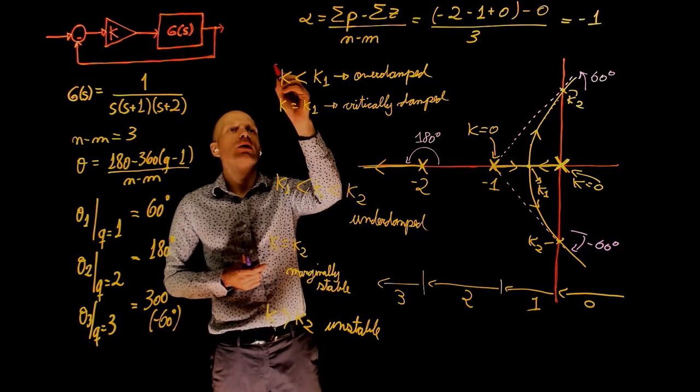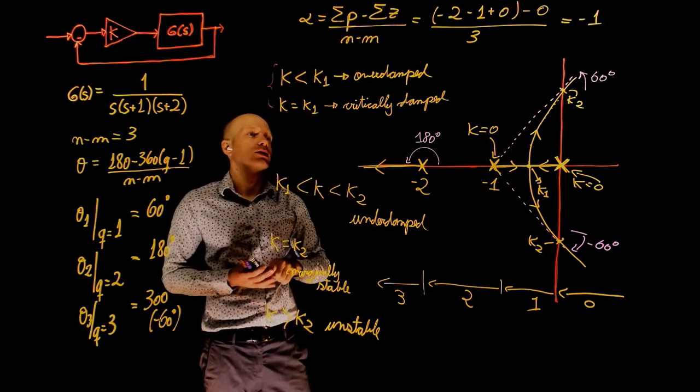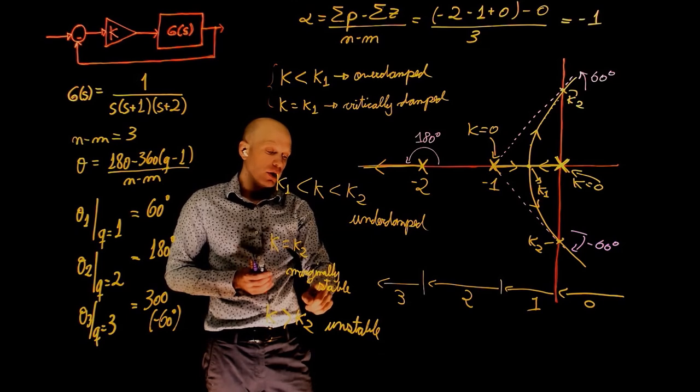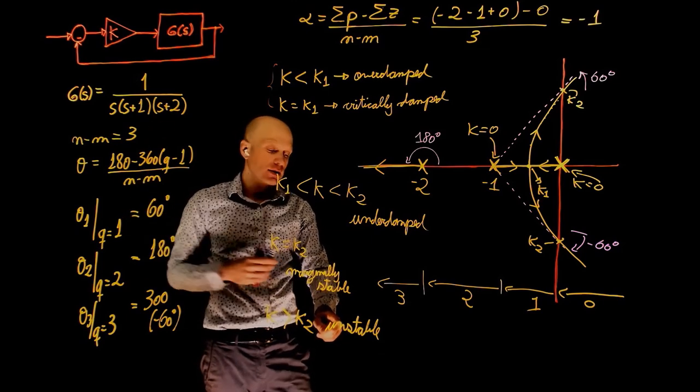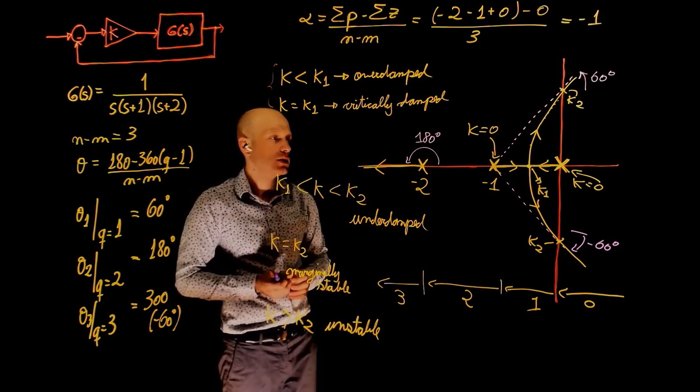But now I have to be also careful. We went from something that was overdamped to underdamped, marginally stable. And if k is high enough, we can even make the system unstable.